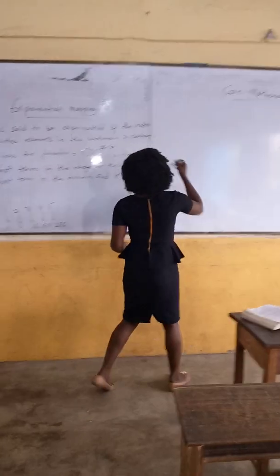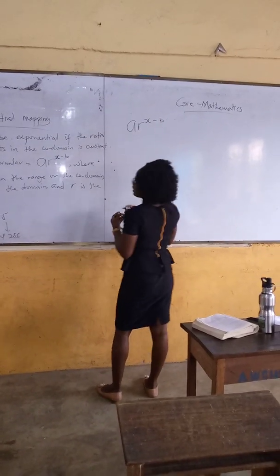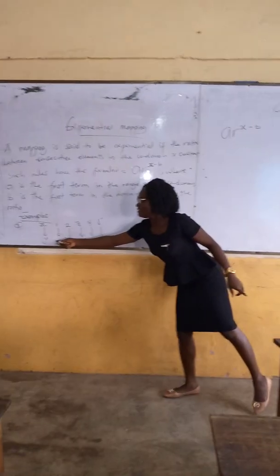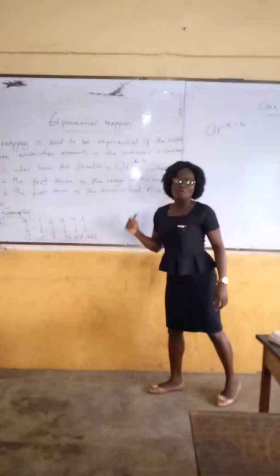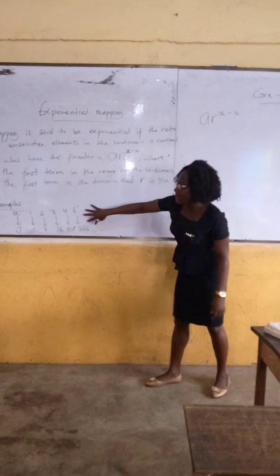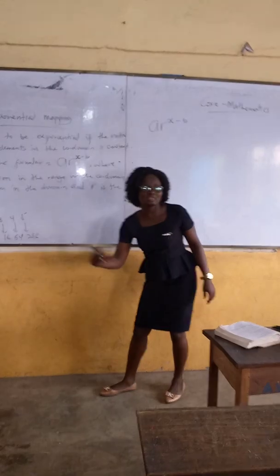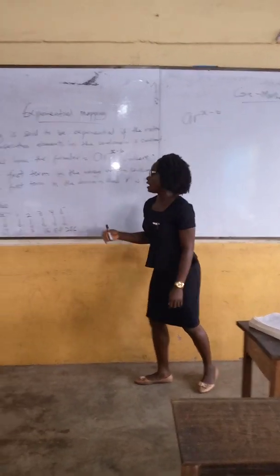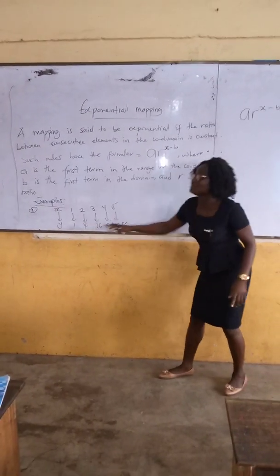Using the formula, we have ar^(x-b). A equals the first term in the co-domain — these are our co-domain values — and these are our domain values. For you to know that this mapping is exponential, look at the co-domains. Do you have a constant ratio between them? Compared to a linear mapping, where we had a constant difference between terms.